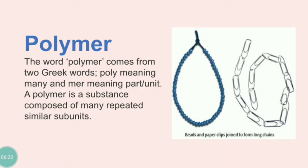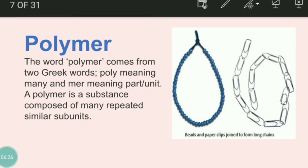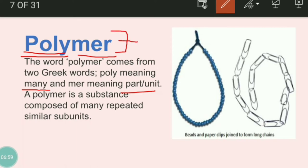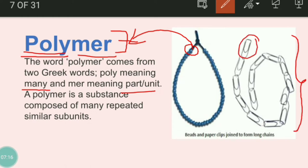Poly means many, and 'mer' means unit. So when you combine many units, you get a polymer. A polymer is made up of many repeating units. For example, if one bead is a monomer, then this necklace is our polymer. Similarly, one paper clip is a monomer and a long chain of paper clips is a polymer. So I hope polymer is clear to you.